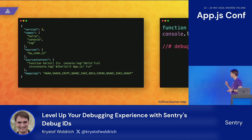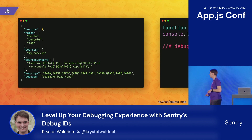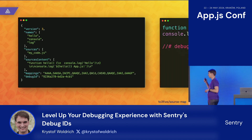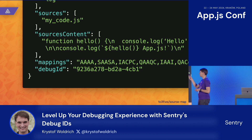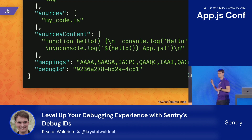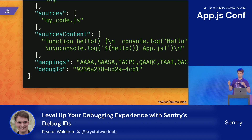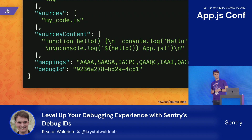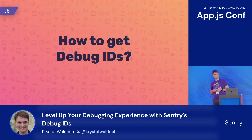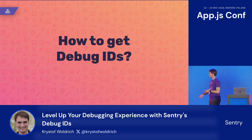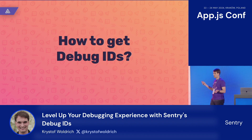Let's look at how this debug ID translates back to the source map. It's super simple — there is just this key, debug ID, the same ID as seen in the bundle file. And now we have a strong, unbreakable relationship between the two files. But how do we get here — how do we run a build command and get the debug ID?